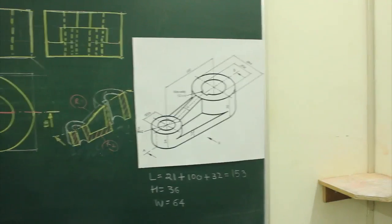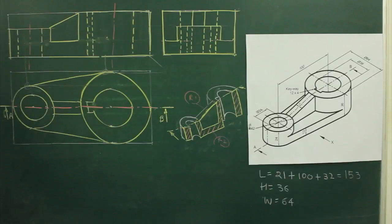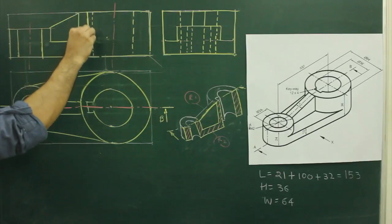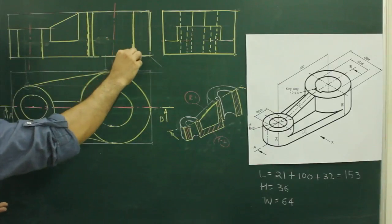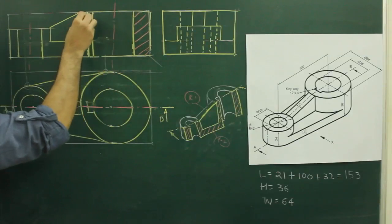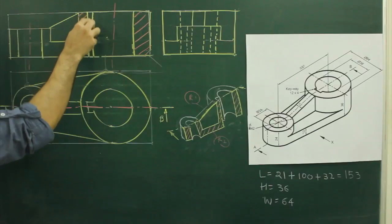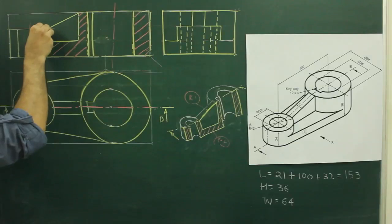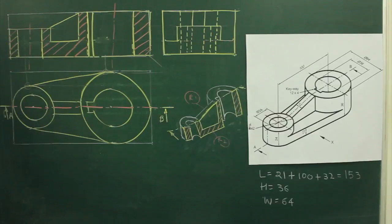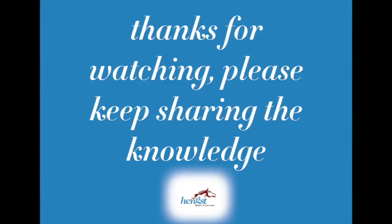What we will do — we will erase this line in the front view. This part will become dark, this part will become dark, and this also will become dark. We need to hatch this area. Now see, over here there will be no hatching, because we are not cutting any part over here — so that won't be hatched. This part won't be hatched, and this part also won't be hatched.